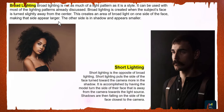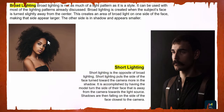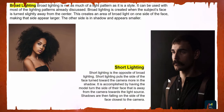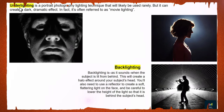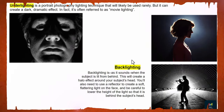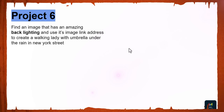Broad lighting uses a large softbox for a natural studio look. Short lighting shows mostly shadow on the face, with the bright side opposite the camera. We also have under lighting for a scary-movie effect, and back lighting for a more artistic photography style. Project six: find an image with amazing back lighting and use its image link to create a walking lady with an umbrella under the rain in a street scene.